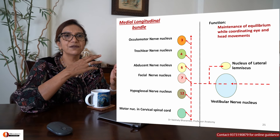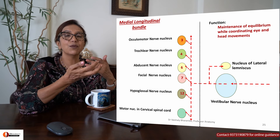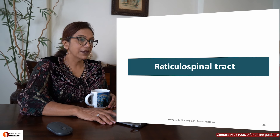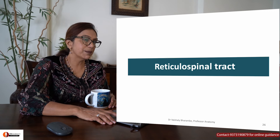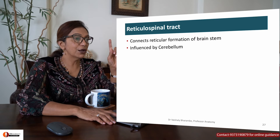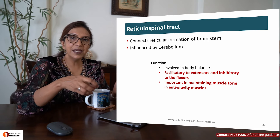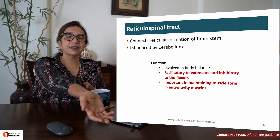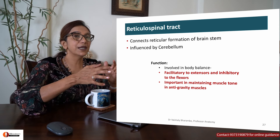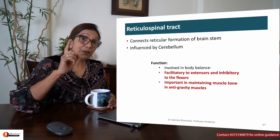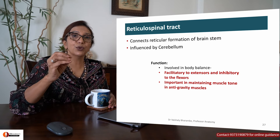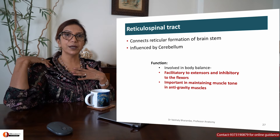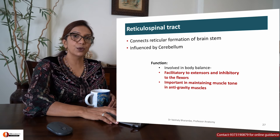Many students find the MLB and tectospinal tract actions somewhat overlapping, and to some extent they do. Now the last tract: the reticulospinal tract, which connects the reticular formation of the brain stem, carrying information down into the spinal cord. It is again facilitatory to extensors and inhibitory to flexors, helping to maintain body balance. It is very important in maintaining the muscle tone of anti-gravity muscles — all your anti-gravity muscles holding your body upright have their tone maintained by the reticulospinal tract.